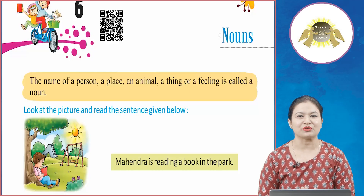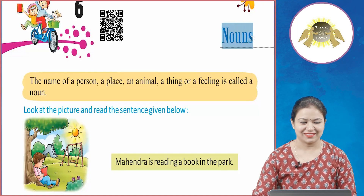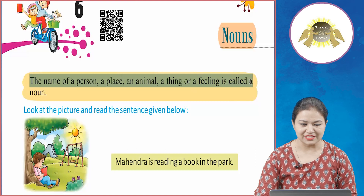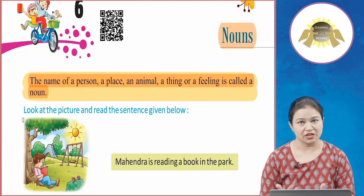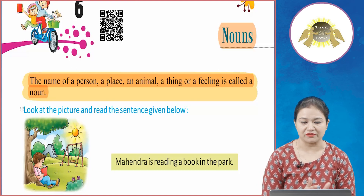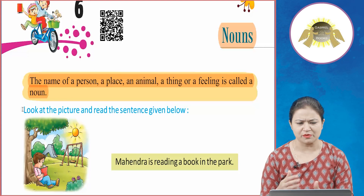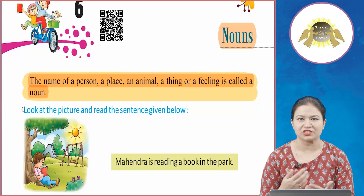Hello students, how are you all? I hope you all are doing well. Today we are going to study about nouns. The name of a person, a place, an animal, a thing, or a feeling is called a noun. किसी भी व्यक्ती का नाम, कोई जगह का नाम, किसी जानवर का नाम, या किसी भी चीज का नाम, या किसी भी फीलिंग को अगर हम दर्शाते हैं तो उसे हम नाउन कहते हैं।